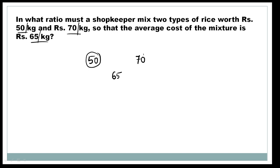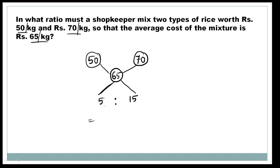We solve this simply by cross subtraction. We have 50 per kg and 70 per kg, with a mean of 65 per kg. Cross subtracting: 70 minus 65 gives 5, and 65 minus 50 gives 15. So the ratio is 5 is to 15, which simplifies to 1 is to 3.